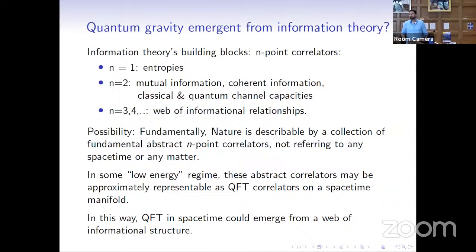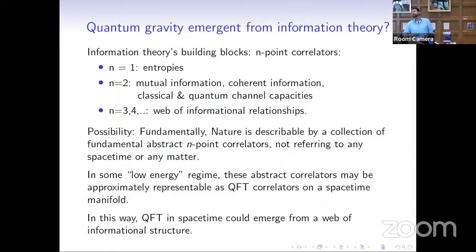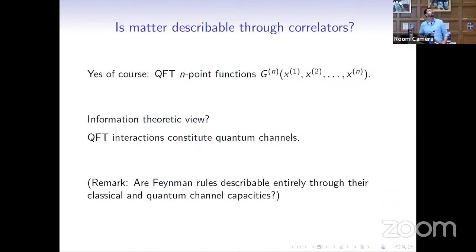Could it be that in some regime these correlators, initially abstract and not referring to spacetime or matter, could have a mathematical representation as quantum field theoretical correlators on a curved spacetime? If so, then quantum field theory on curved spacetime as we know it would be emergent from such a web of informational structure. Is matter describable through correlators? Of course — quantum field theory is made out of n-point functions. What we can add using information theory is that quantum field theoretical interactions constitute quantum channels. When two particles scatter off each other, each particle learns classical information about the other, but also quantum information — they hand over entanglement to each other. And it is possible to study all interactions in terms of their classical and quantum channel capacities.